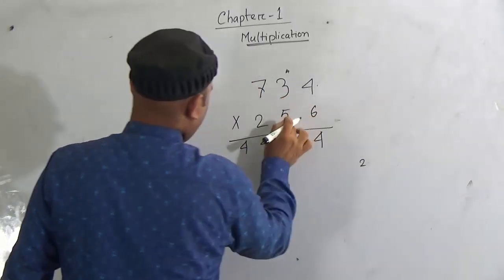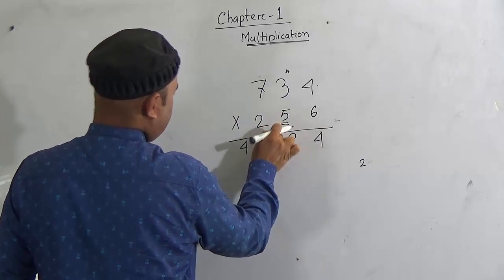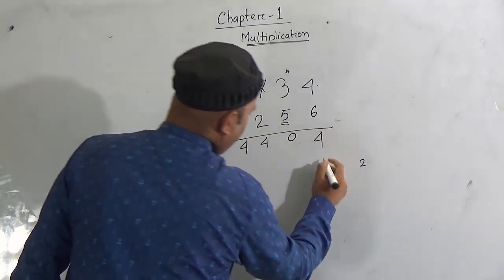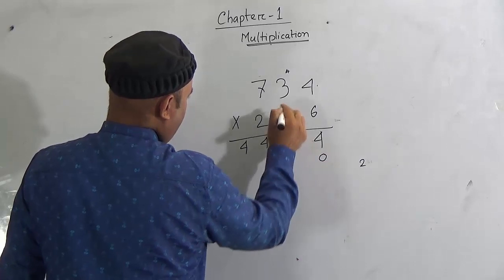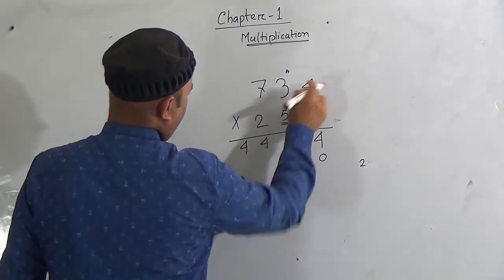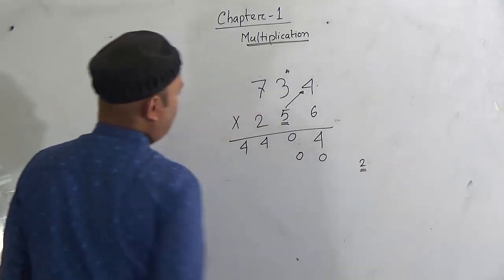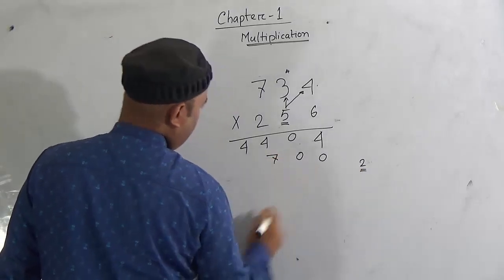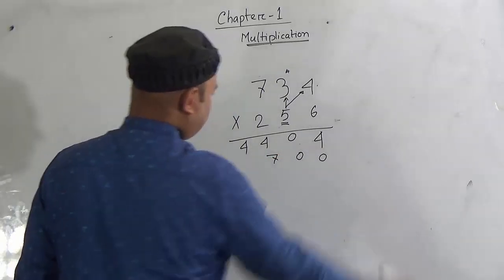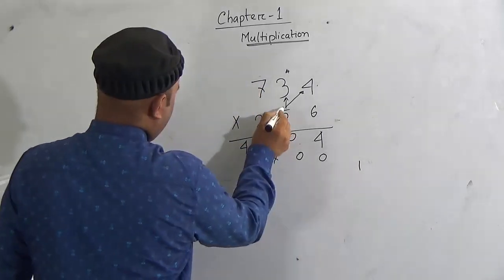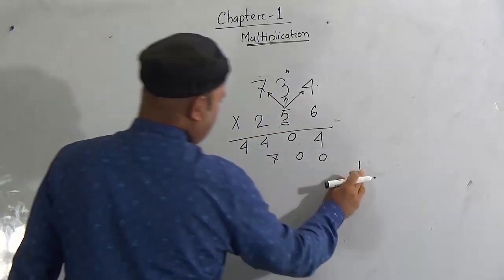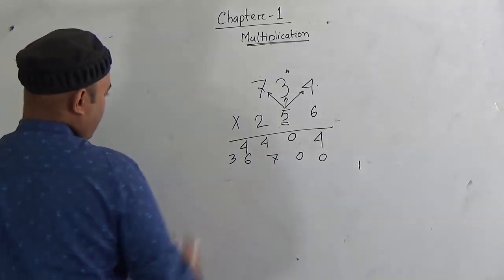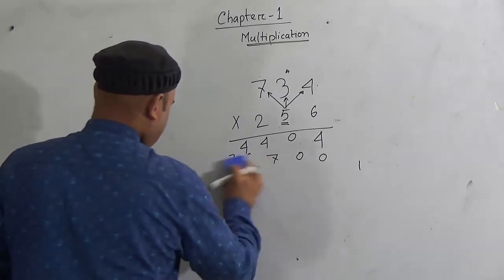Next we multiply by the tens place digit, which is 5. Since it is in the tens place, we skip the ones place using a zero. Multiply 5 × 4 = 20, carry 2. Then 5 × 3 = 15, plus 2 = 17, carry 1. Then 5 × 7 = 35, plus 1 = 36. So the result is 3670, written as 36700.